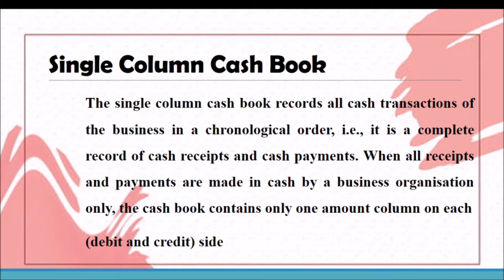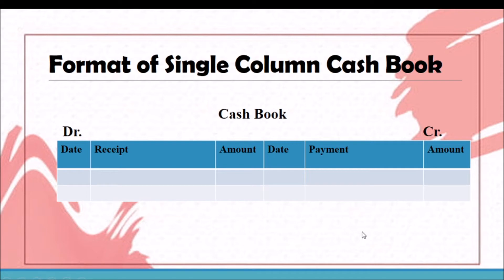The single column cash book records all cash transactions of the business in chronological order. It is a complete record of cash receipts and cash payments. When all receipts and payments are made in cash, the cash book contains only one amount column. In the debit side it shows receipts, and in the credit side it shows payments. Let us learn the format of the single column cash book — all receipts are recorded on the debit side and all payments on the credit side.